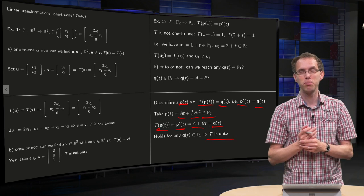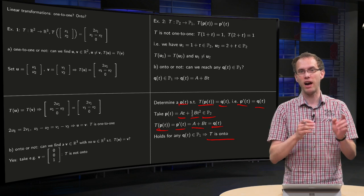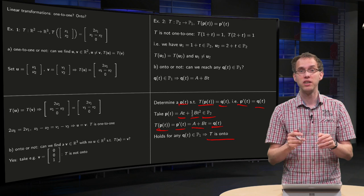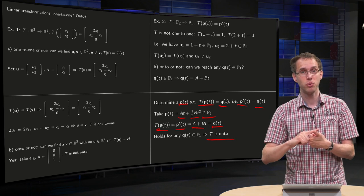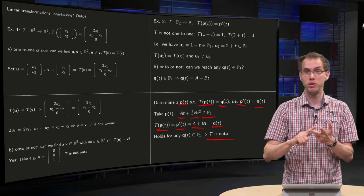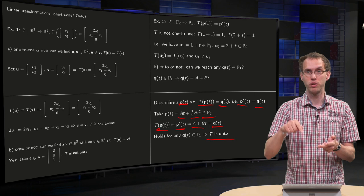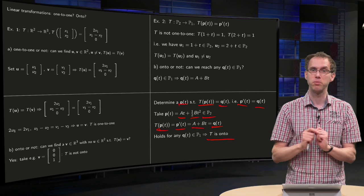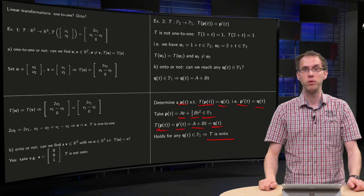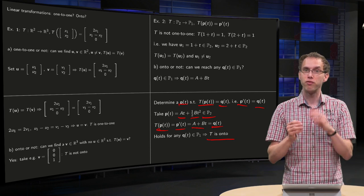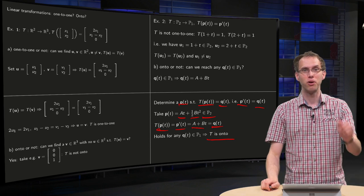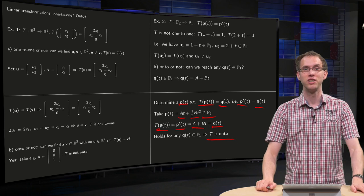From these examples, you might get the wrong impression that you are either one-to-one or onto. That's not necessarily the case. A transformation can be one-to-one and onto, or one-to-one and not onto, or not one-to-one but onto (we saw those two in the examples), or neither one-to-one nor onto. So we have four cases. You saw examples of cases two and three in this video. Try to come up with an example of the first and last case yourself.